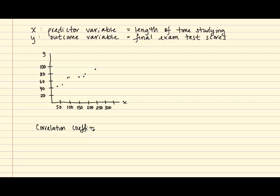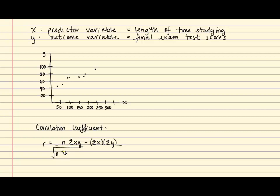The correlation coefficient is identified as r. In the numerator, we have n times the sum of xy minus the sum of x times the sum of y. And in the denominator, we basically have two parts. We first have the square root of n times the sum of x squared minus the sum of x quantity squared. And in the second part of the denominator, we have the square root of n times the sum of y squared minus the sum of y quantity squared.